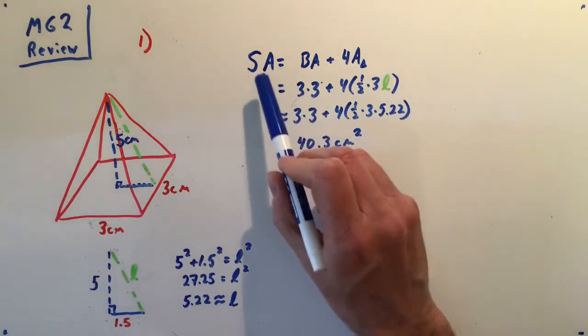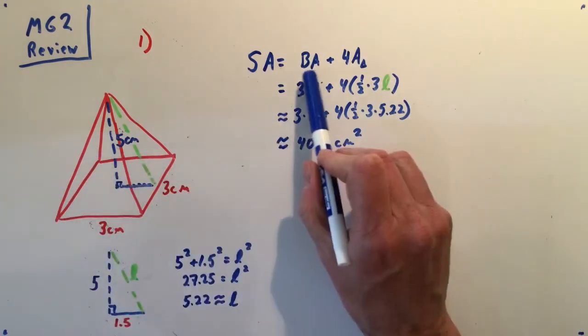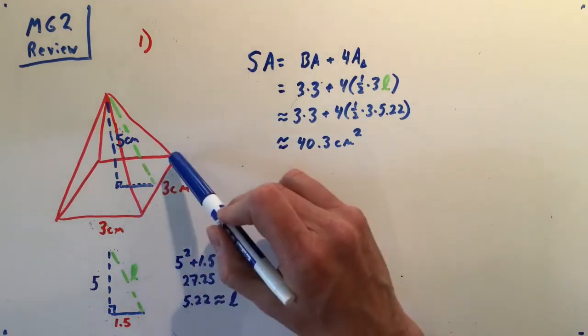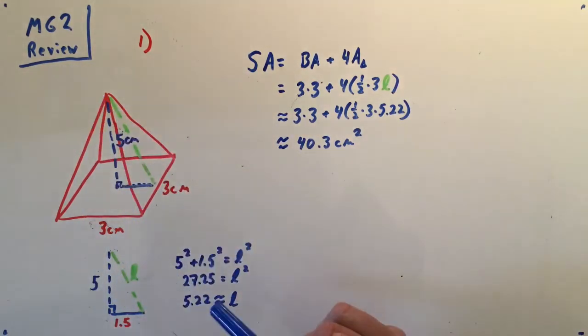In order to find surface area, we find the area of this square at the bottom, which is just three by three square, and then I need to find all the areas of these four triangles right here.